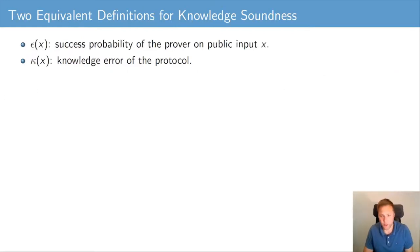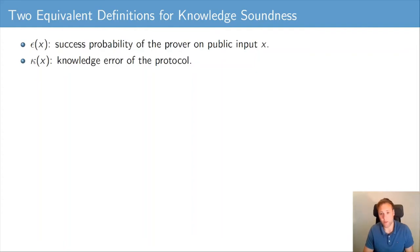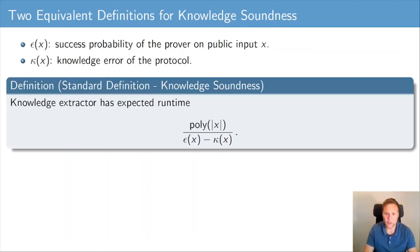Let us now formalize the properties of the extractor. ε(X) denotes the success probability of the prover on public input X, and κ(X) is the knowledge error of the protocol. Intuitively, a protocol has knowledge error κ(X) if a dishonest prover succeeds in convincing the verifier with probability at most κ(X). Given this notation, the standard definition of knowledge soundness requires the knowledge extractor to have expected runtime poly(|X|) divided by ε(X) minus κ(X).